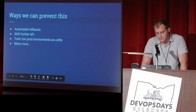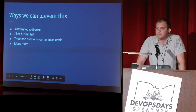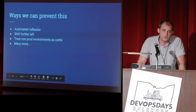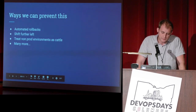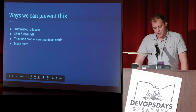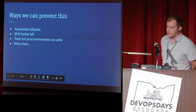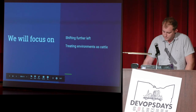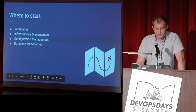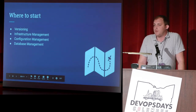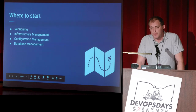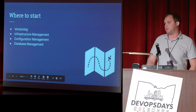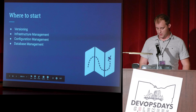How can this be prevented? We can automate rollbacks, which tends to be harder than most people think — especially with DML changes specifically. We could also shift further left and treat our non-prod environments as cattle. We'll be talking about shifting left and treating our environments as cattle. We need to start first by versioning, then look at infrastructure management, configuration management, and database management — how those things help us produce environments at will.